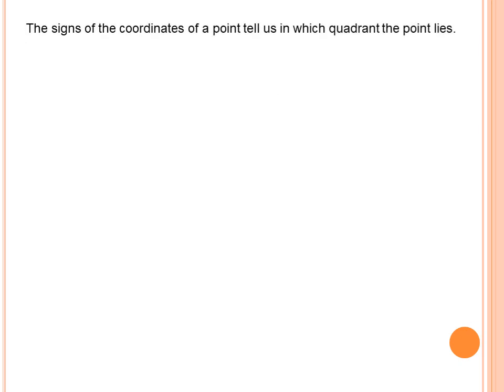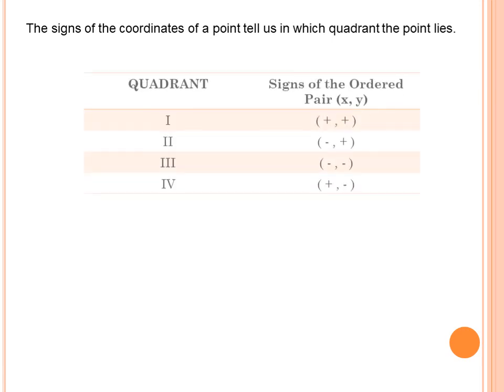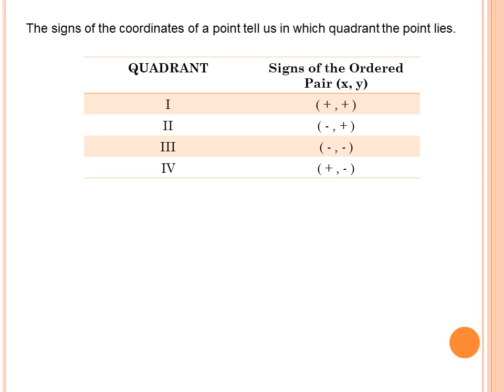The signs of the coordinates of a point tell us in which quadrant the point lies. In quadrant 1, both the x-coordinate and y-coordinate are positive. In quadrant 2, the x-coordinate is negative and the y-coordinate is positive. In quadrant 3, they are both negative. In quadrant 4, the x-coordinate is positive and the y-coordinate is negative.